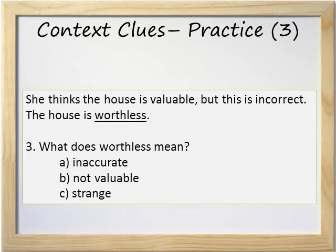Number 3: She thinks the house is valuable, but this is incorrect. The house is worthless. What does worthless mean? A. Inaccurate. B. Not valuable. Or C. Strange. Think about the context clues that can help you answer this question. She thinks the house is valuable, but this is incorrect. So if that's incorrect, what does that mean about the house? The answer is B. Not valuable. She thinks the house is valuable but is incorrect or wrong — the house is not valuable. It is worthless.